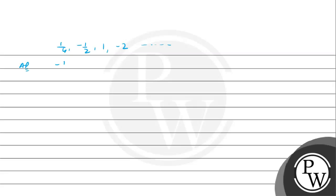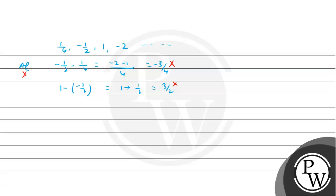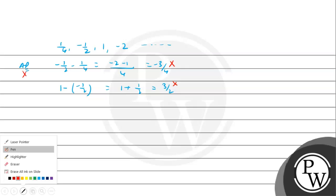If we check for AP, the common difference would be minus 1/2 minus 1/4, which gives (negative 2 minus 1)/4 = minus 3/4. Then D3 minus D2 is 1 minus (minus 1/2) = 1 plus 1/2 = 3/2. We can see that these two are not equal, so it cannot be an AP.